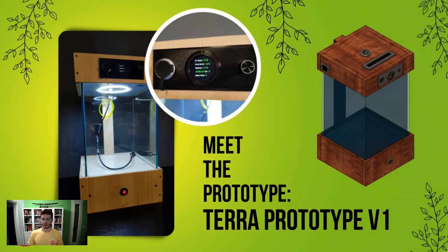We have built the first prototype of Terra, which you can see in the picture. This prototype covers 95% of all the features we have shown you in the previous slide. For example, we have not yet selected the CO2 sensor and also the external humidity and temperature sensor. From the software side, we have already developed a library that allows us to start using Terra and begin the first tests.